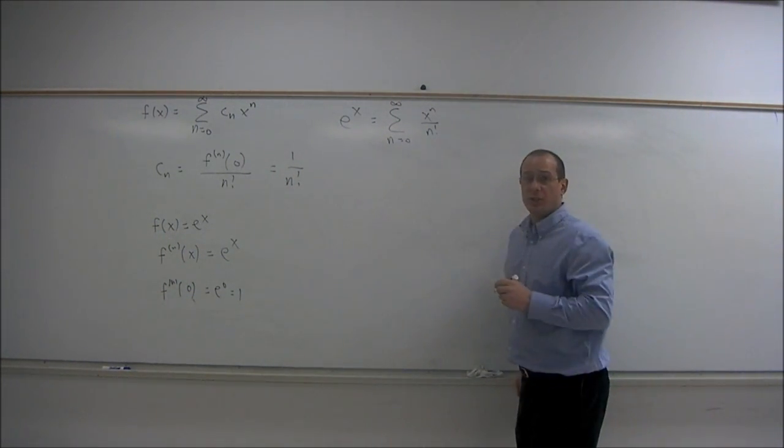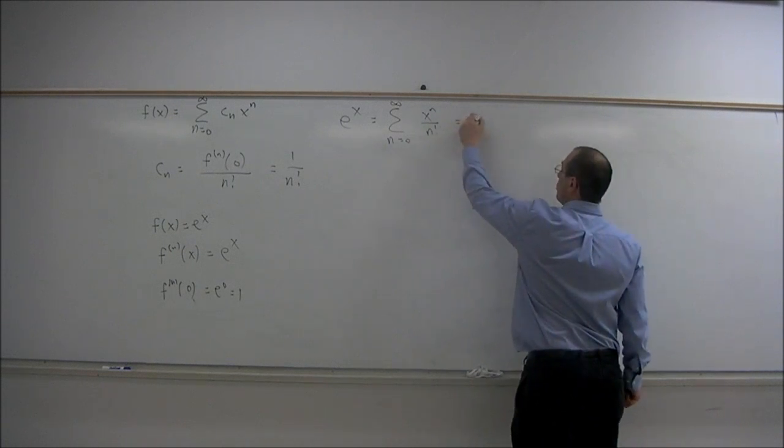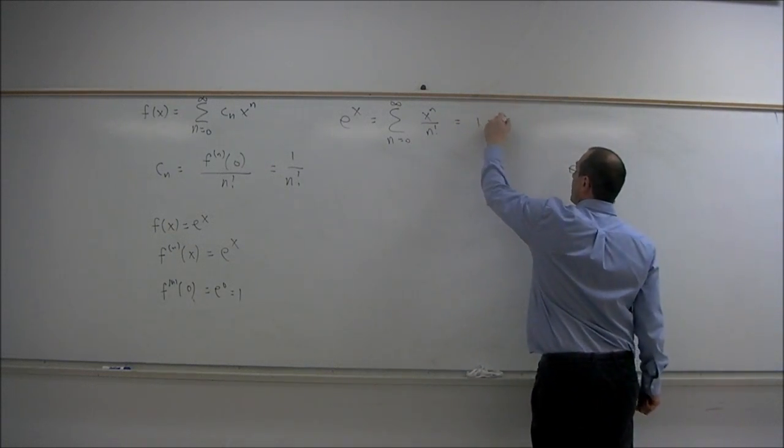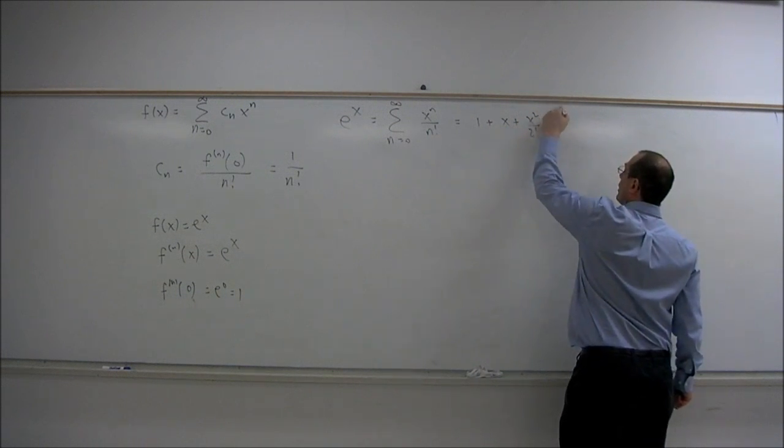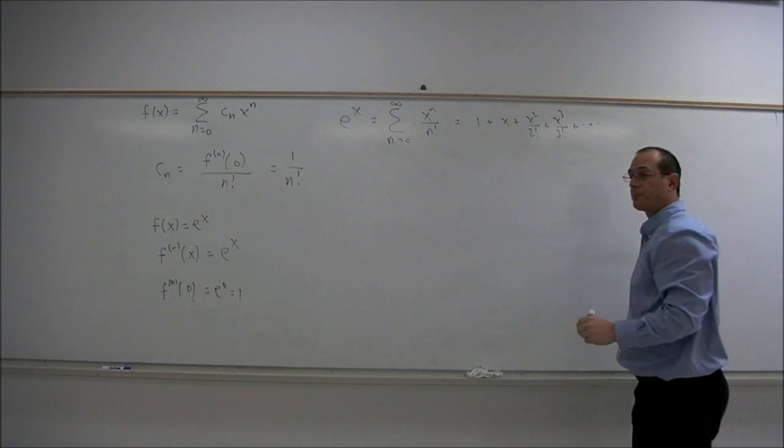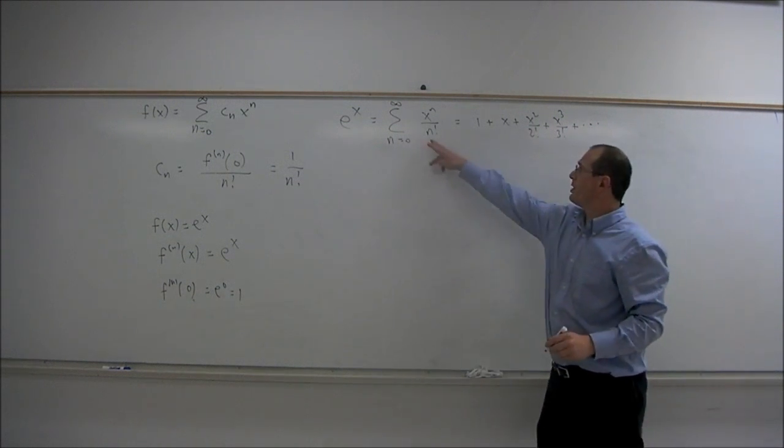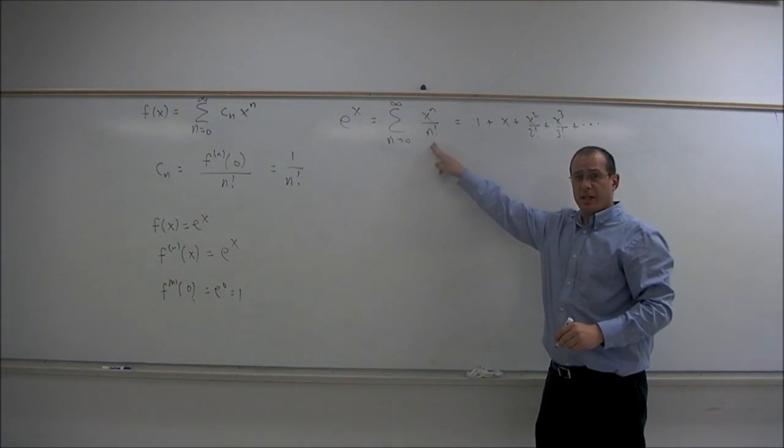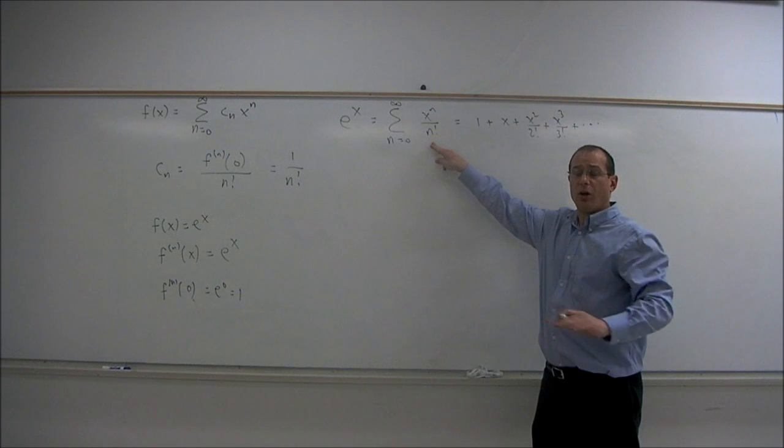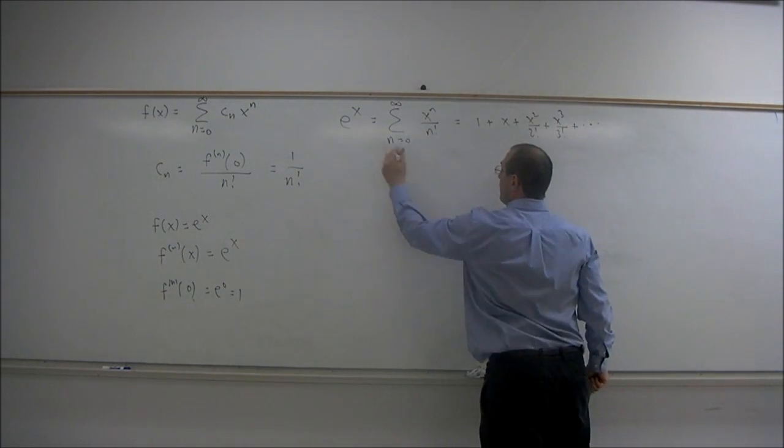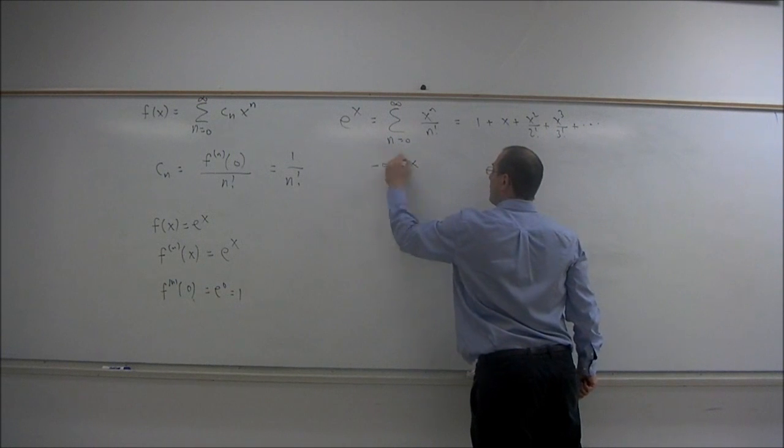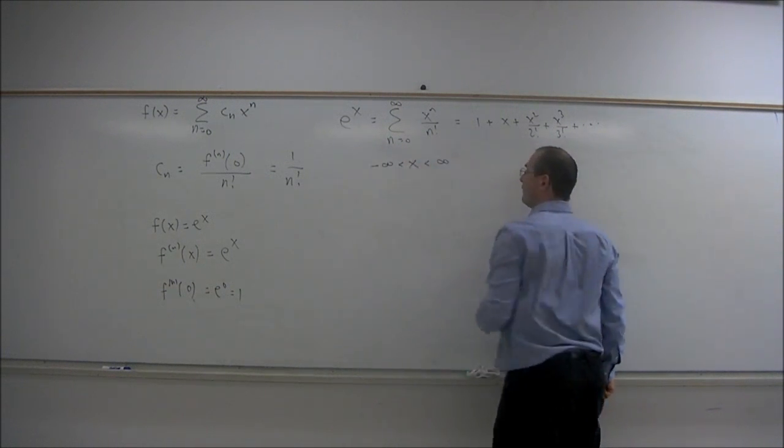Zero factorial is one, so this is equal to 1 + x + x²/2! + x³/3! + etc. And the interval of convergence of this series is easily seen to be all real numbers using the ratio test. So this equation is valid for x between minus infinity and infinity.